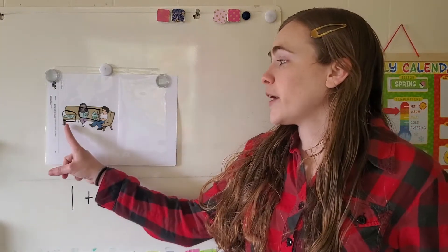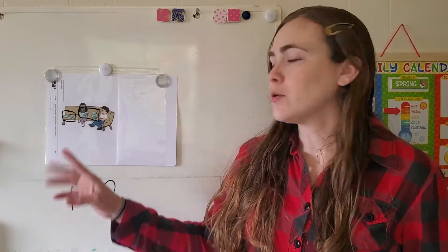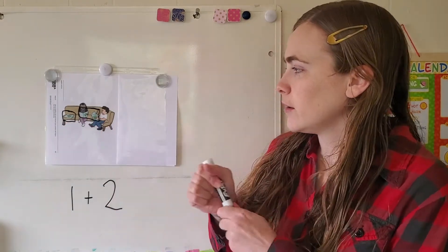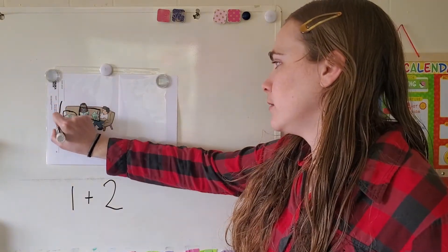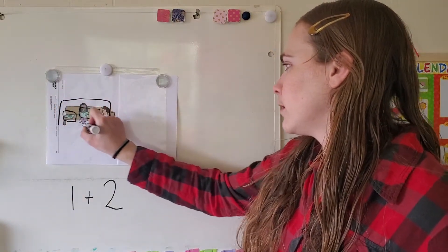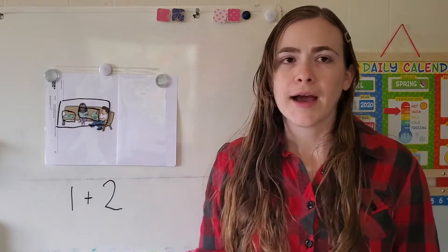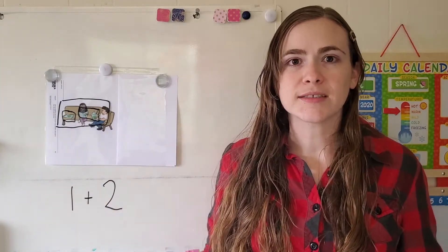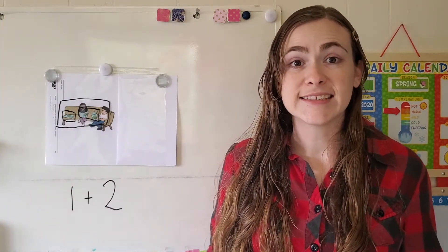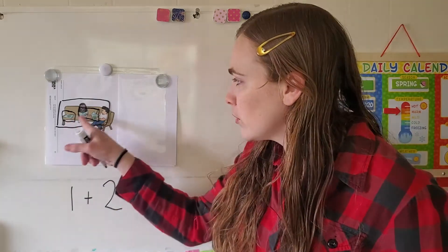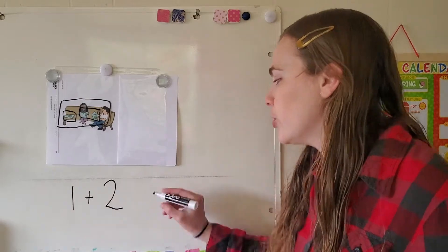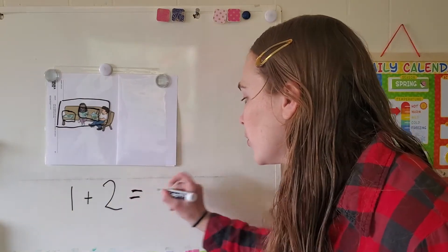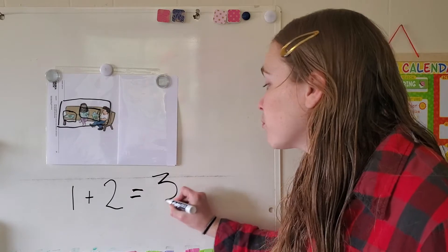So I know there's one here and I know there's two here. Now I want to box them all together. How many books are in my box? Three. One plus two equals three.